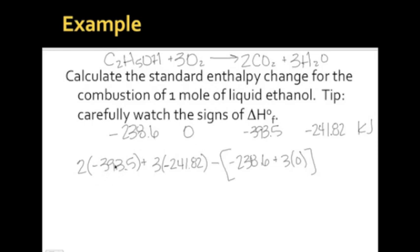So this one works out to be... I'm going to work out each of these individually. 2 times 393.5. You get negative 787 plus 3 times 241.82 gives you negative 725.46 minus a negative. It means you're adding 238.6, and then this one is zero, so it just goes away.